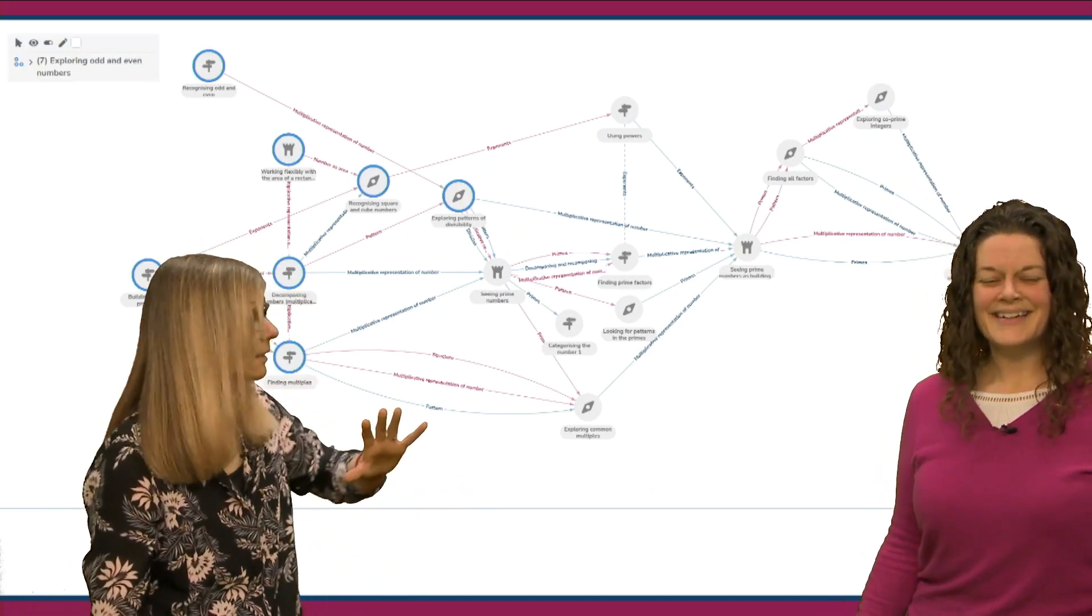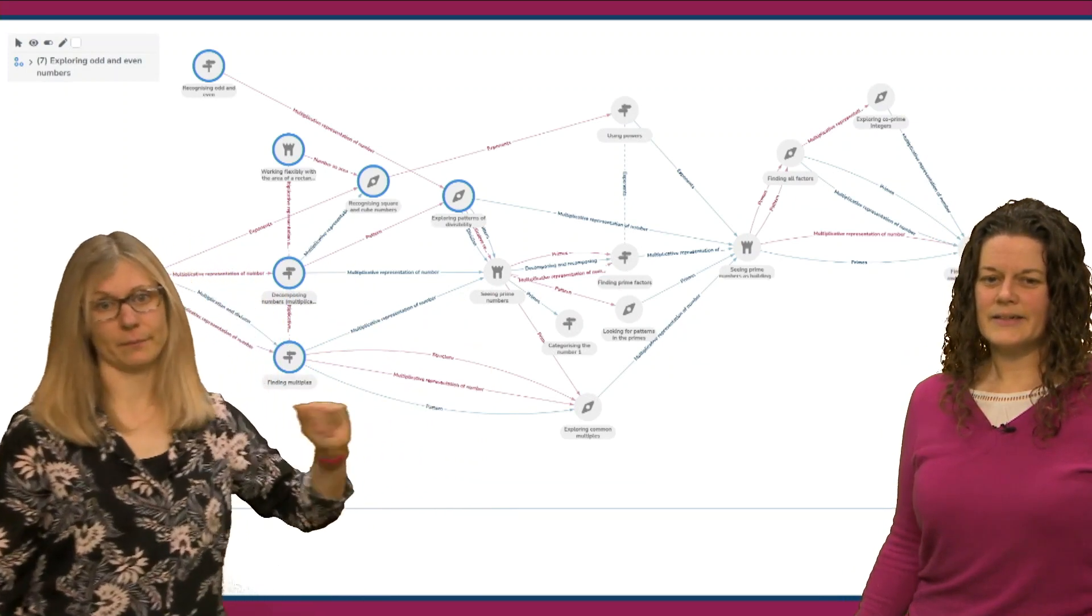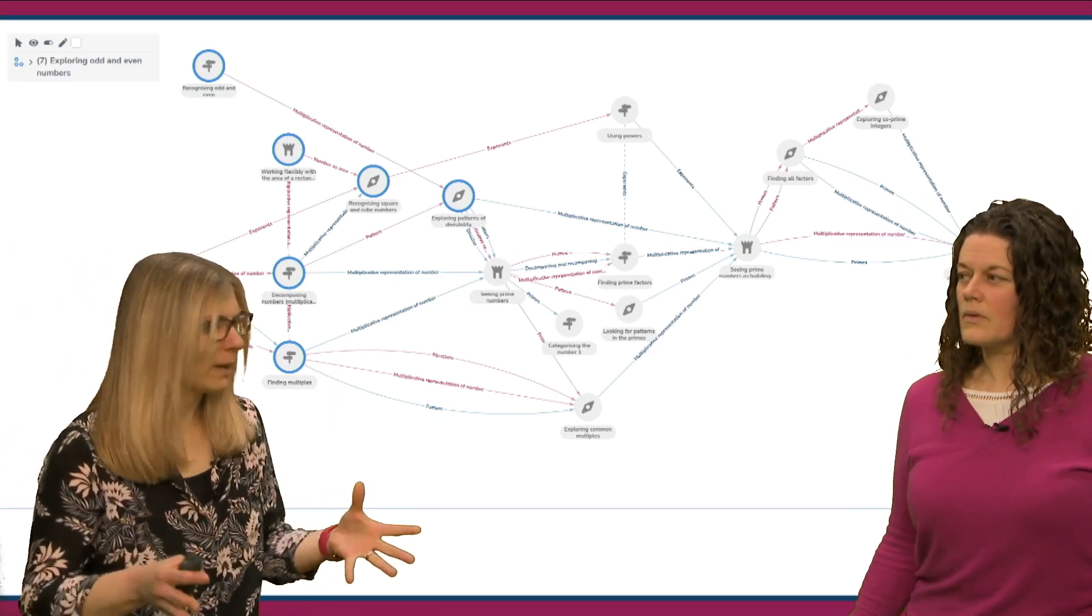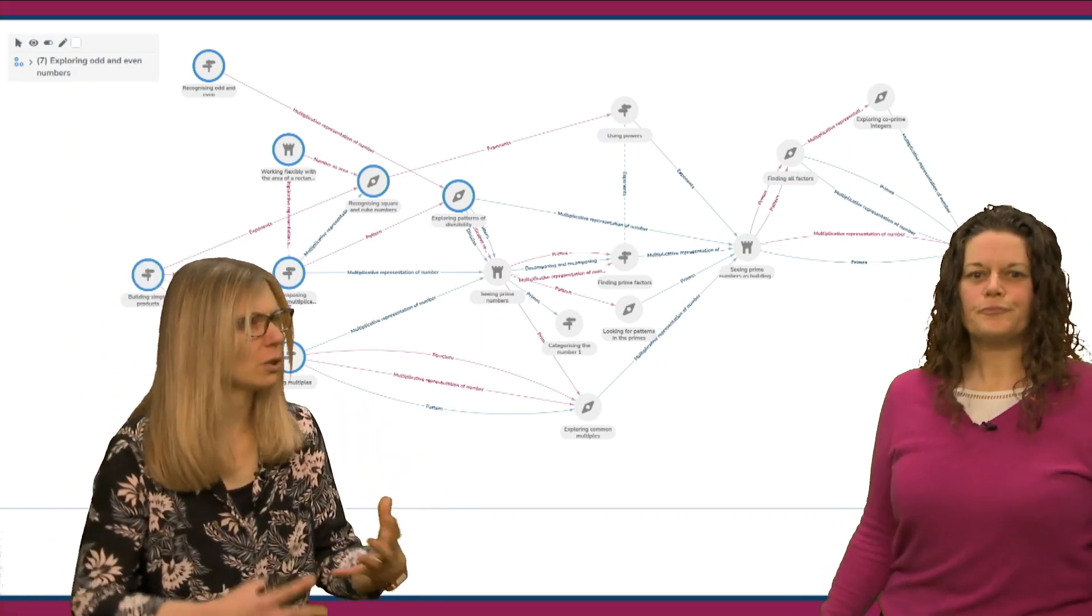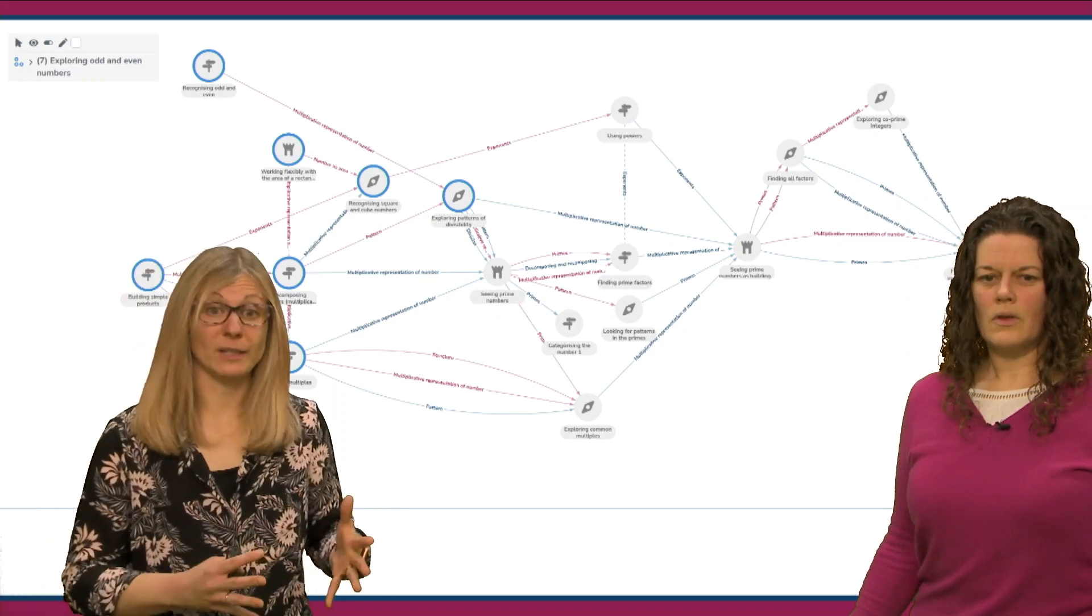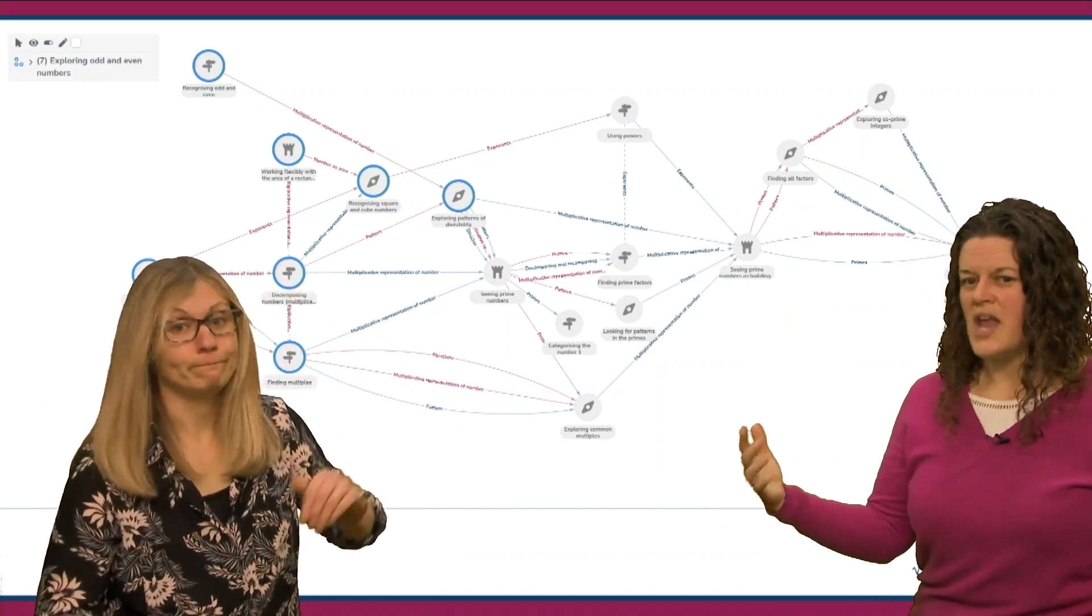What we could do is we could start by looking at the ideas of odd and even numbers here. So, some of those really early experiences where we're thinking about what makes two, what makes those shapes, what makes those multiples of two, how are we looking at those, how are we representing those, and where do we see them? Okay. And then what happens next? What's the next part of the story?